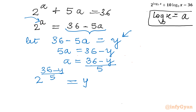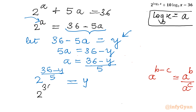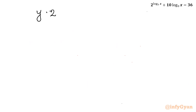Now I will use the property of exponents: a^(b−c) can be written as a^b divided by a^c. Applying this to the left-hand side, I can write 2^(36/5) divided by 2^(y/5), equal to y. Cross-multiplying gives y times 2^(y/5) equal to 2^(36/5).